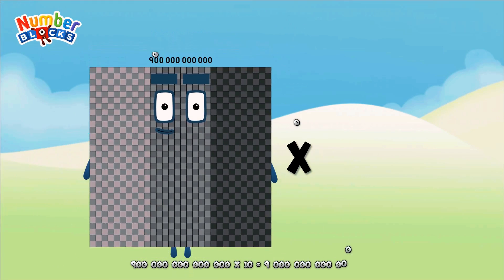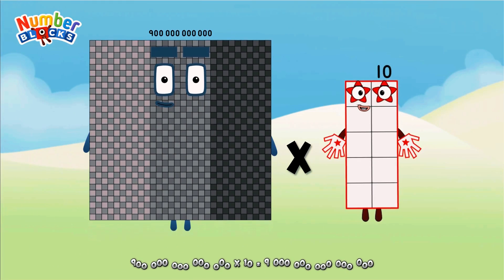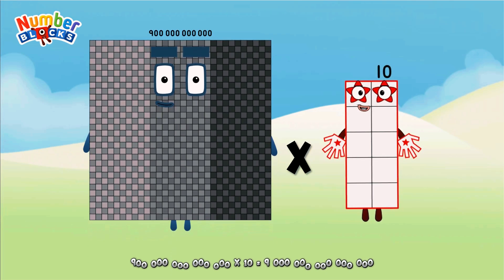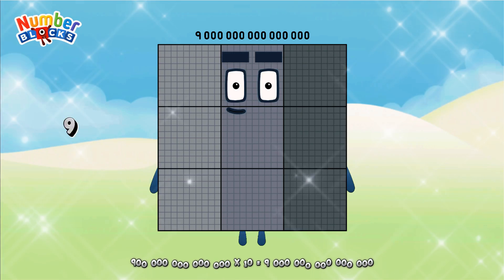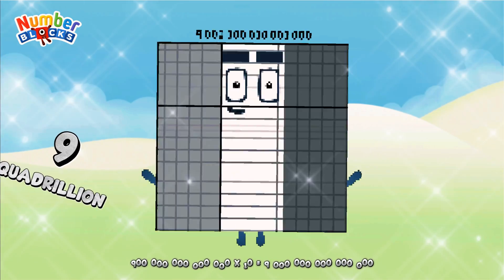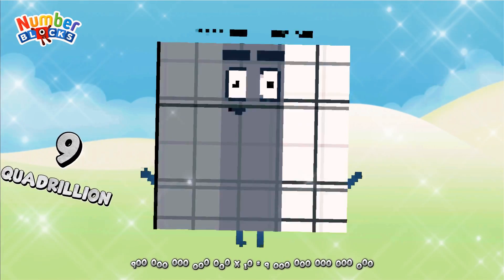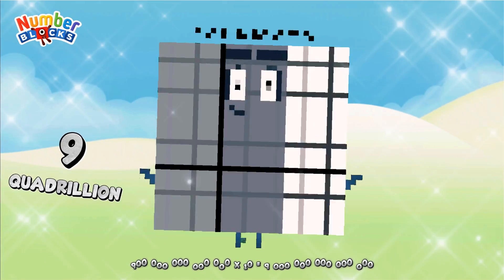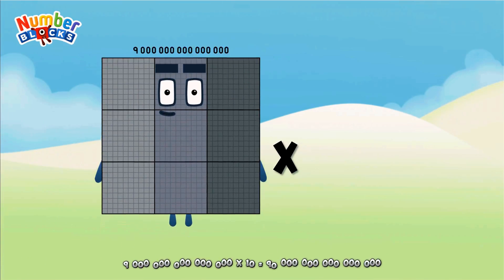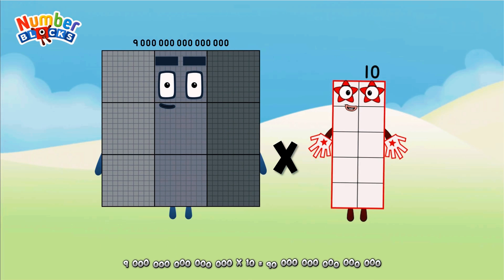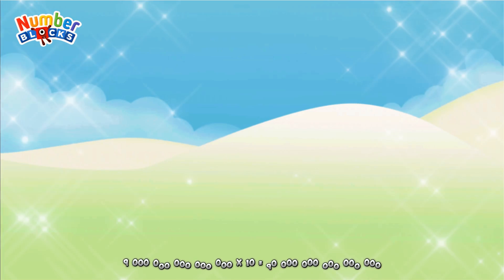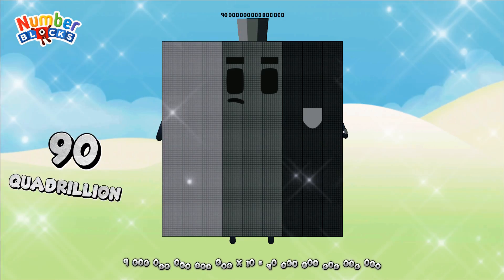900 trillion, multiplicated by 10, equals 9 quadrillion. 9 quadrillion, multiplicated by 10, equals 90 quadrillion.